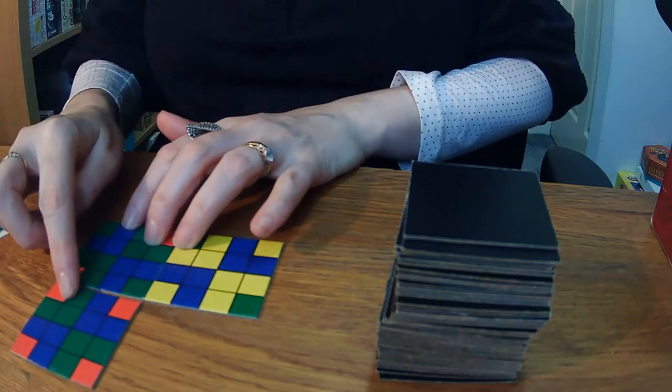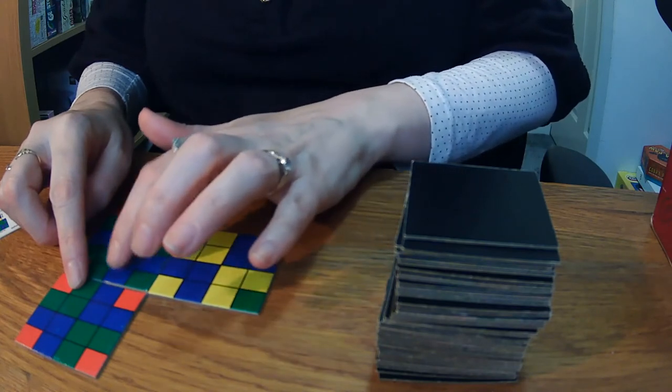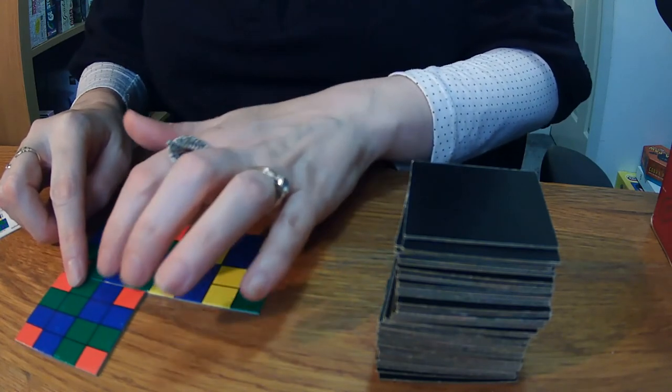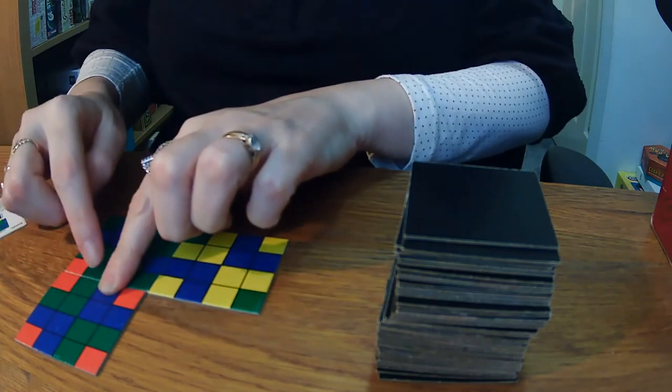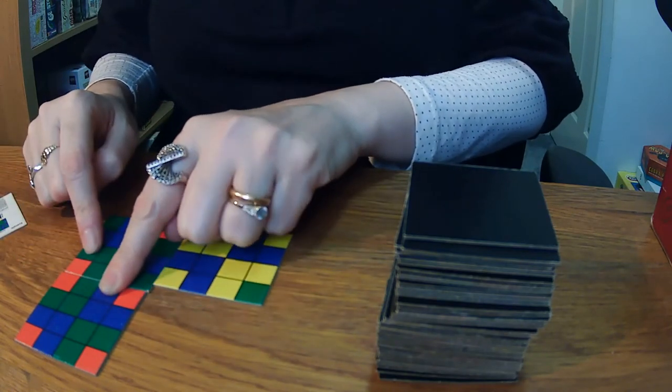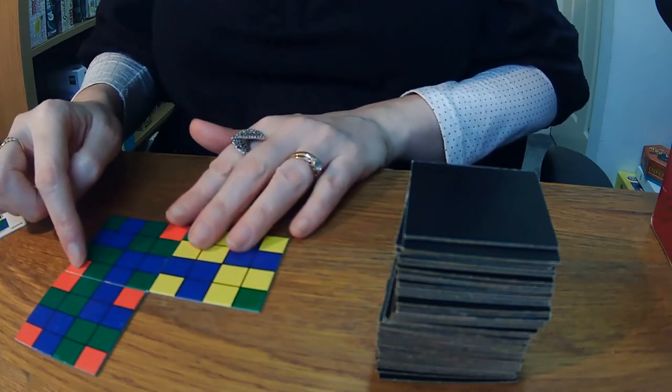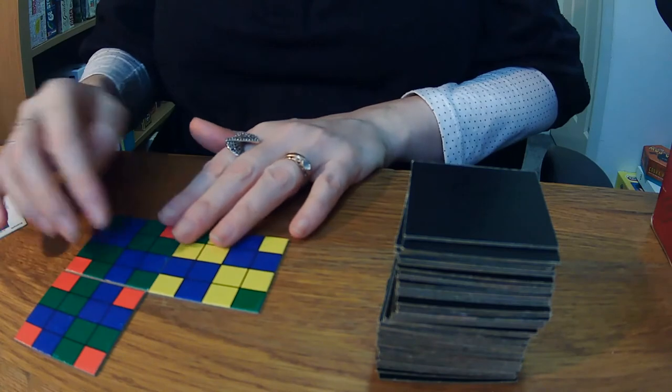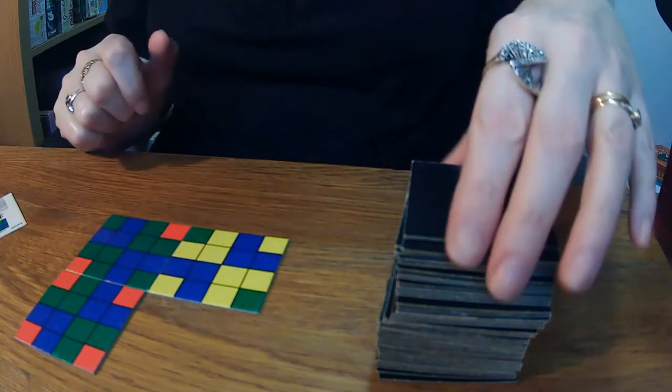And the way to get the most points is to make the longest chain of colours. So if I pop it there, I'm going to score because I'm adding to this original 1, 2, 3, 4, 5, 6 blue. So I would get 9 points plus 1, 2, 3, 4, 5, 6 points there. So that would be 15. And then 2 points, so 17 points because the 2 reds join. So you score for every line that you add to.